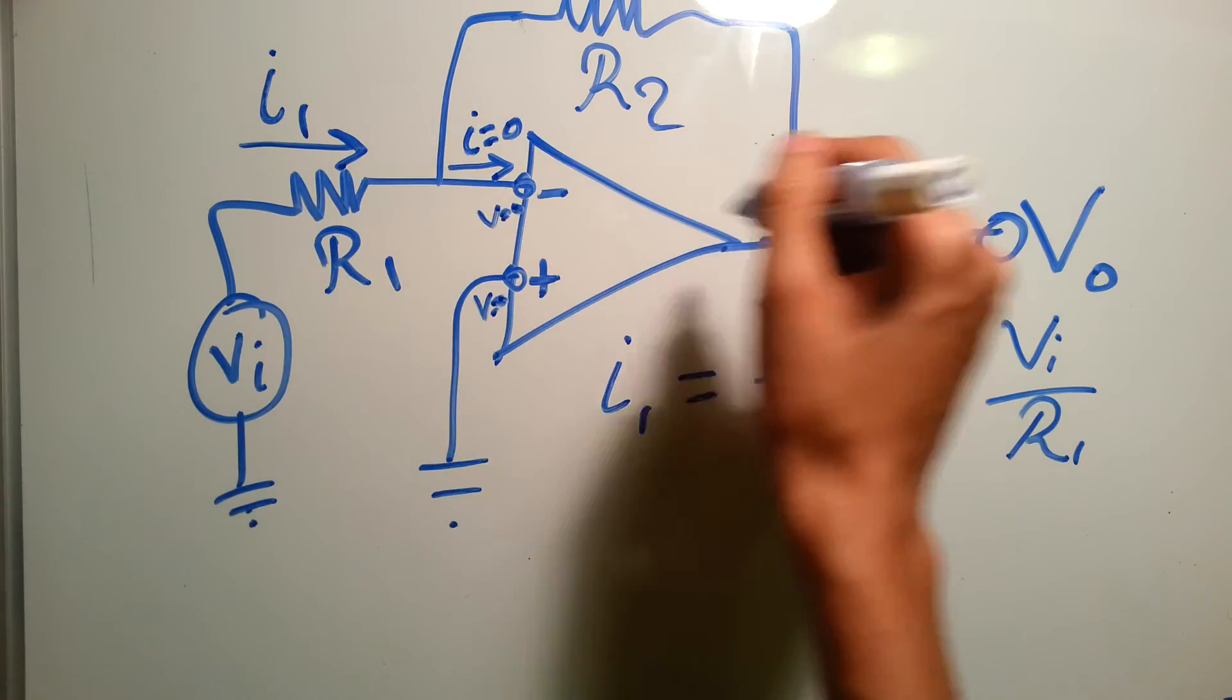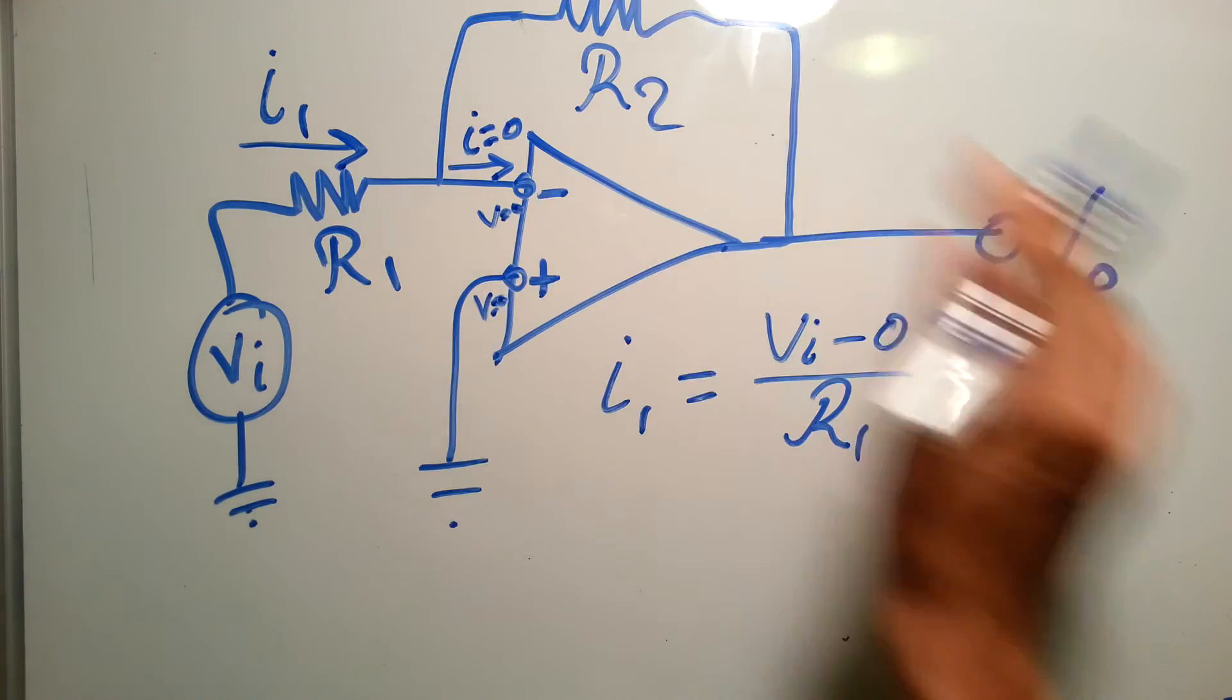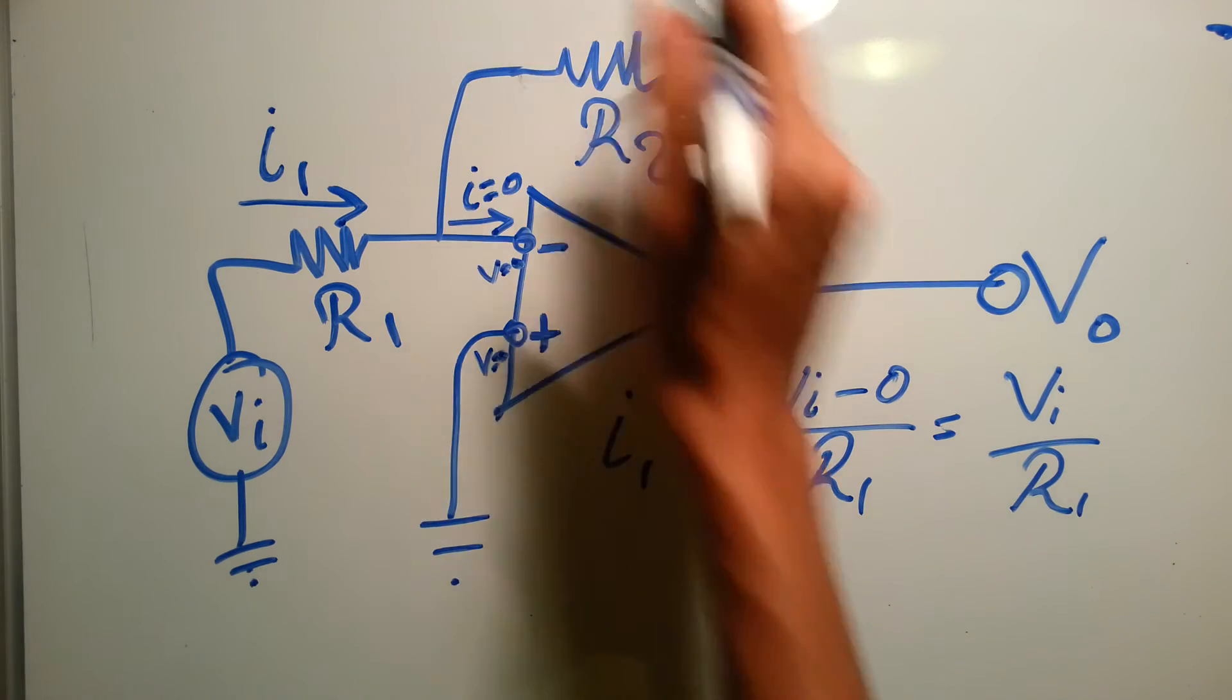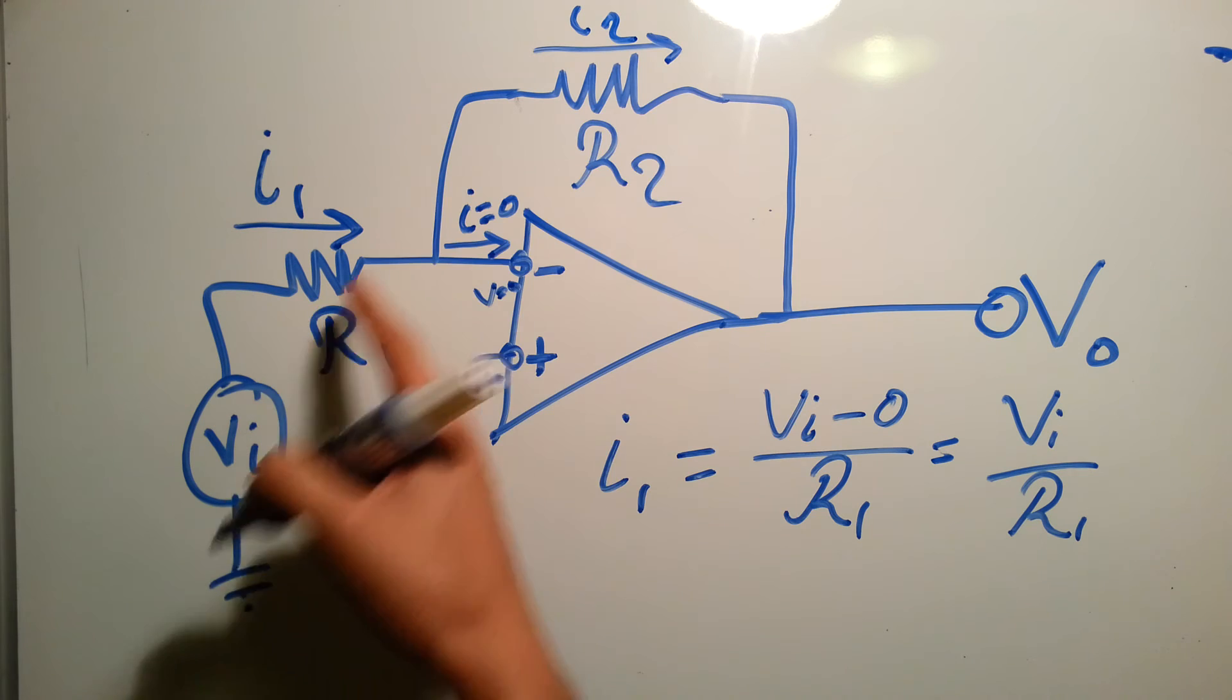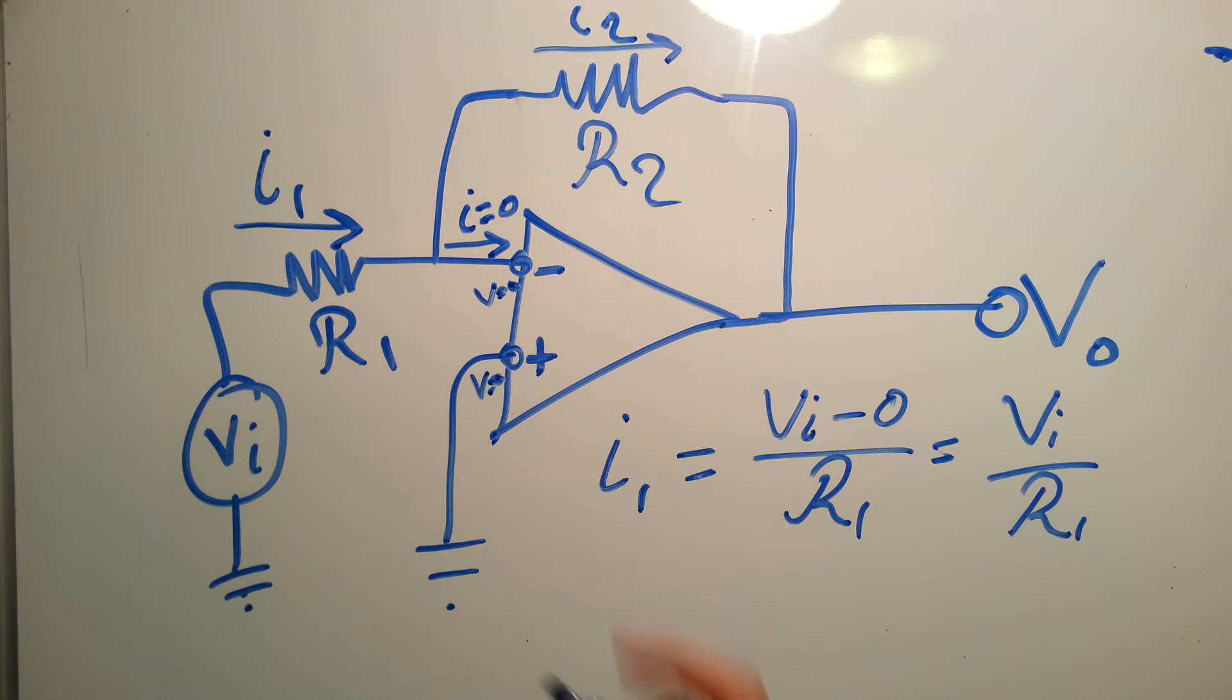will go into that upper branch which has the current I2. So I1 equals I2.